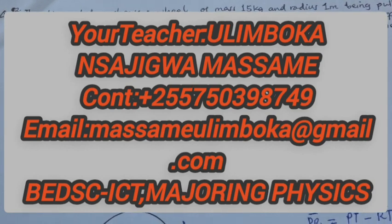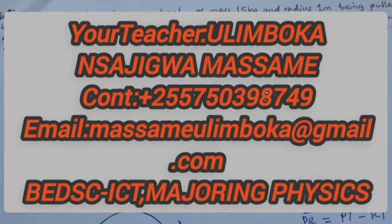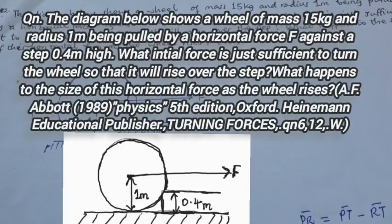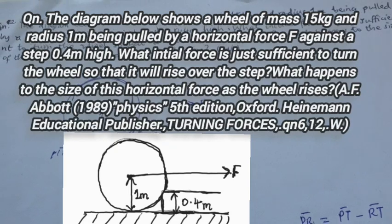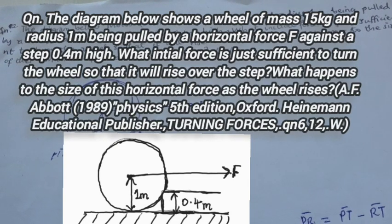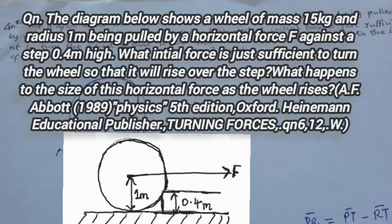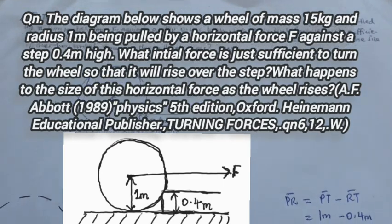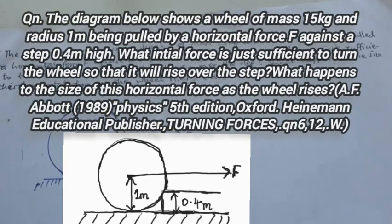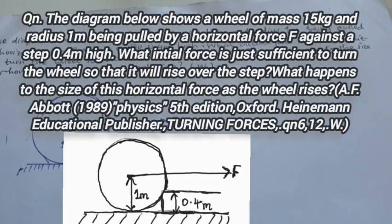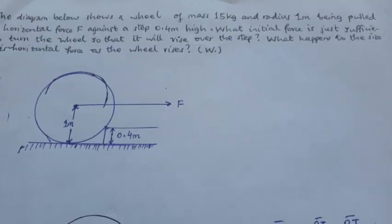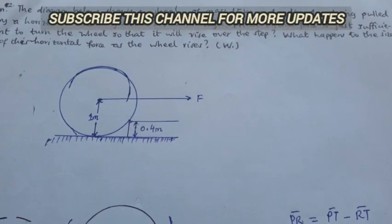I have a question from the AF Abuti below. We're given a wheel with a mass of 15 kilograms and radius of 1 meter. This wheel is required to move off from a step of 0.4 meter high. We ask you to find the initial force that is sufficient to turn the wheel so that it will rise over the step, and what will be of this force when the wheel is over the step.